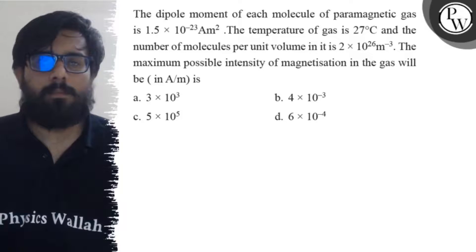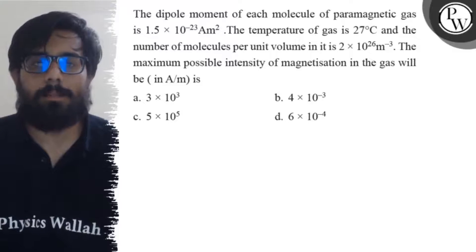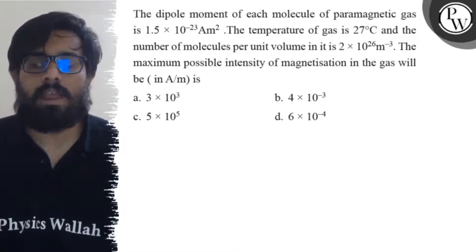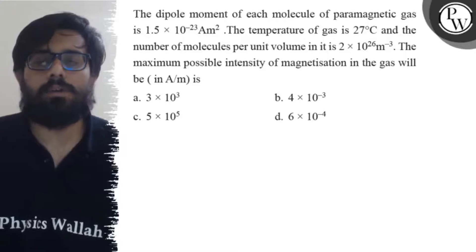The maximum possible intensity of magnetization in the gas will be: option A is 3 × 10^3, option B is 4 × 10^-3, option C is 5 × 10^5, and option D is 6 × 10^-4.